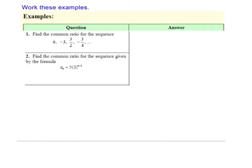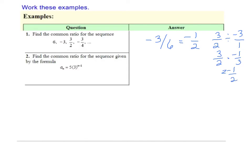To find the common ratio for the sequence, you take the second term, negative 3, and divide it by the first term — that would be negative one-half. That works for any of the terms. For instance, 3/2 divided by negative 3 is the same as 3/2 times negative 1/3, which is also negative one-half. So it doesn't matter which consecutive terms you use.